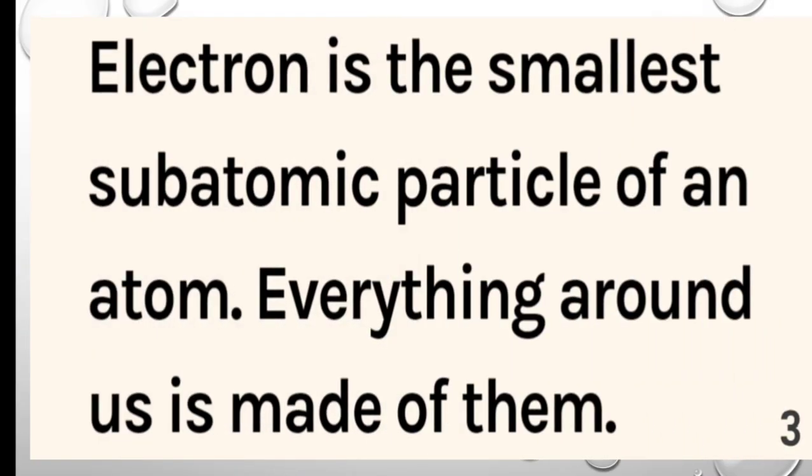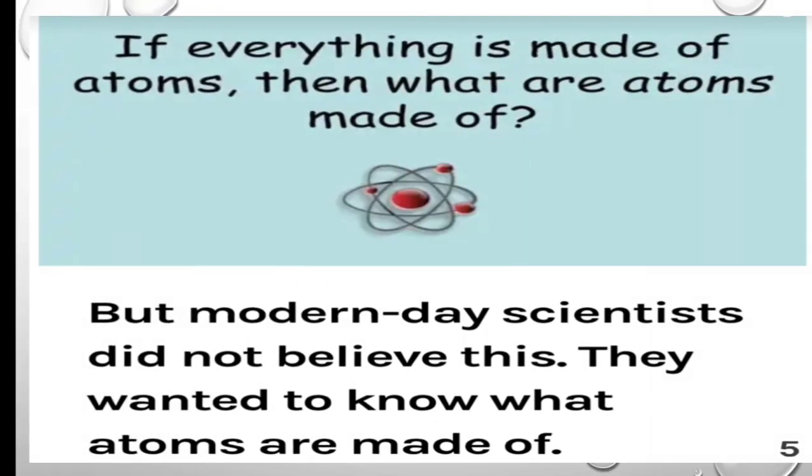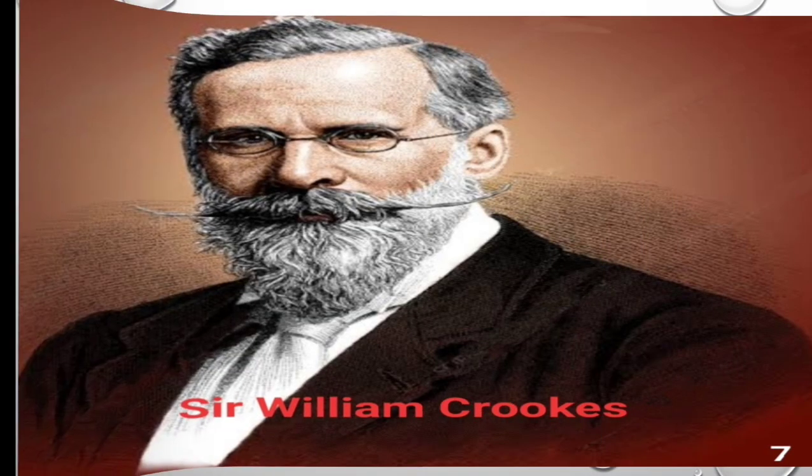Electron is the smallest subatomic particles of an atom and everything around us is made of them. In ancient times, people thought that atoms were so small that they cannot be divided further. But, the modern day scientists didn't believe this. They wanted to know what actually the atoms are made up of. And these questions were answered by the scientists like William Crookes and J.J. Thompson. In 1879,